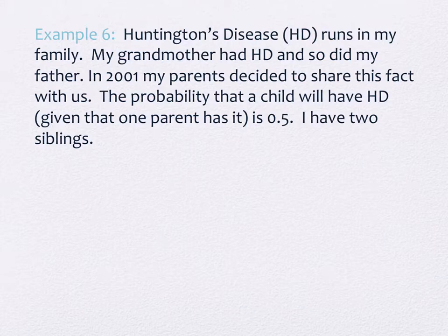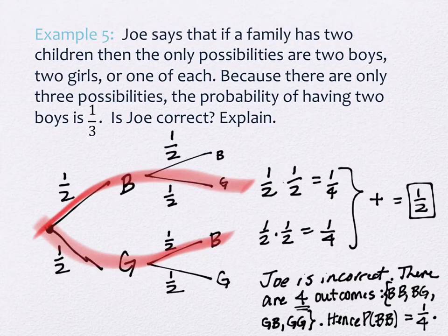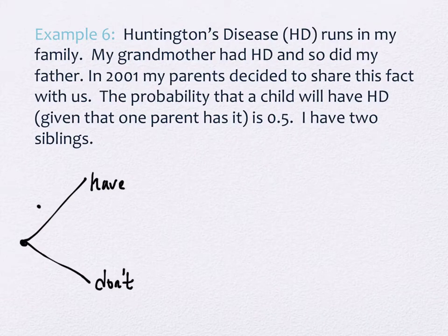We're going to create a tree diagram that shows what this looks like for my family with this information. While I didn't literally draw a tree diagram that night, I did do the mathematics that a tree diagram does as we processed everything. I'm the oldest, so I'm the first branch of the tree. We go in sibling order — this is me — and there are two options: I either have it or I don't. With Huntington's it's 50/50, so we'll use 0.5.